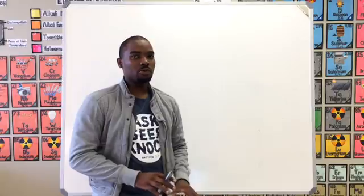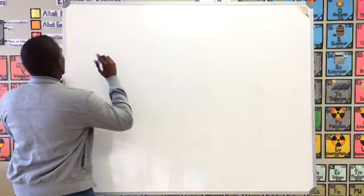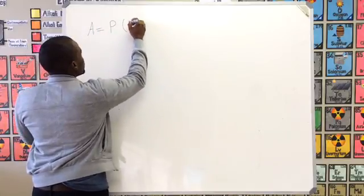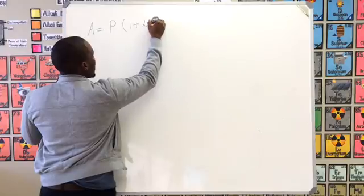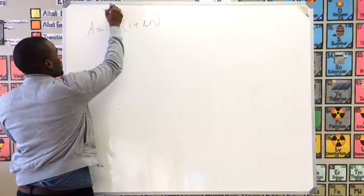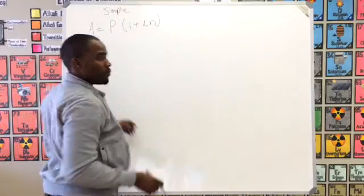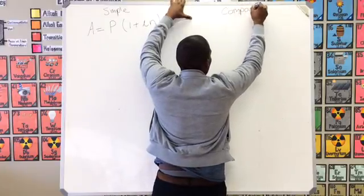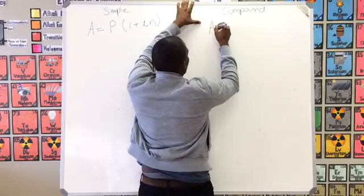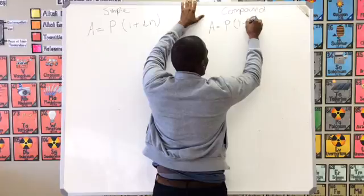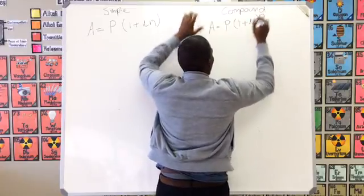We can look at interest in two ways. We have what we call simple interest and we have what we call compound interest. The formula for simple interest is A = P(1 + i × n). Then we've got compound interest, which is similar but slightly different: A = P(1 + i)^n.